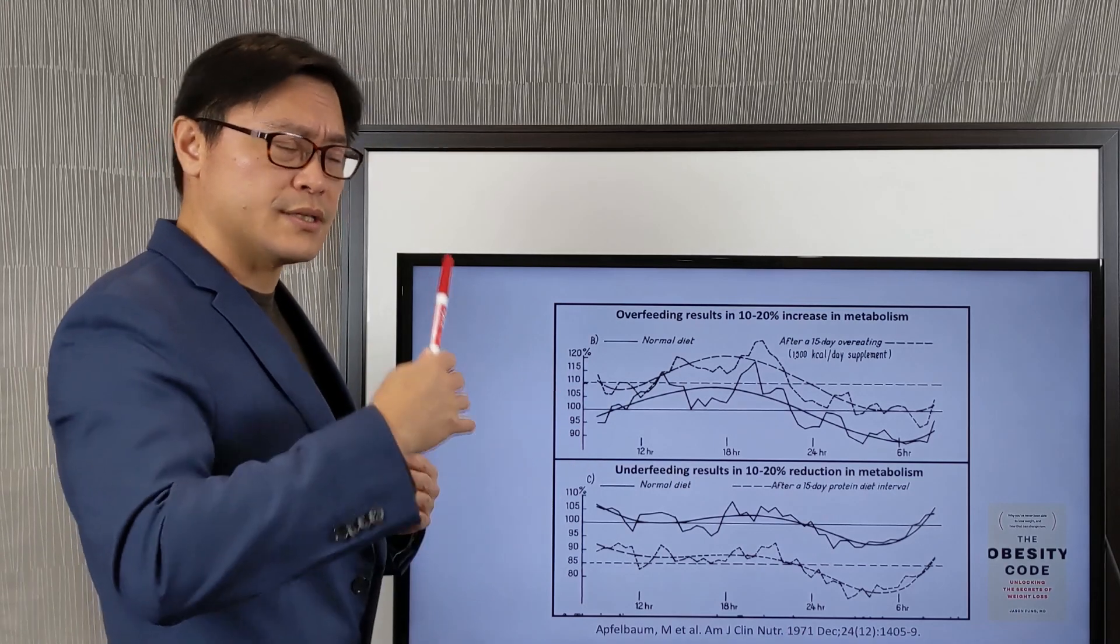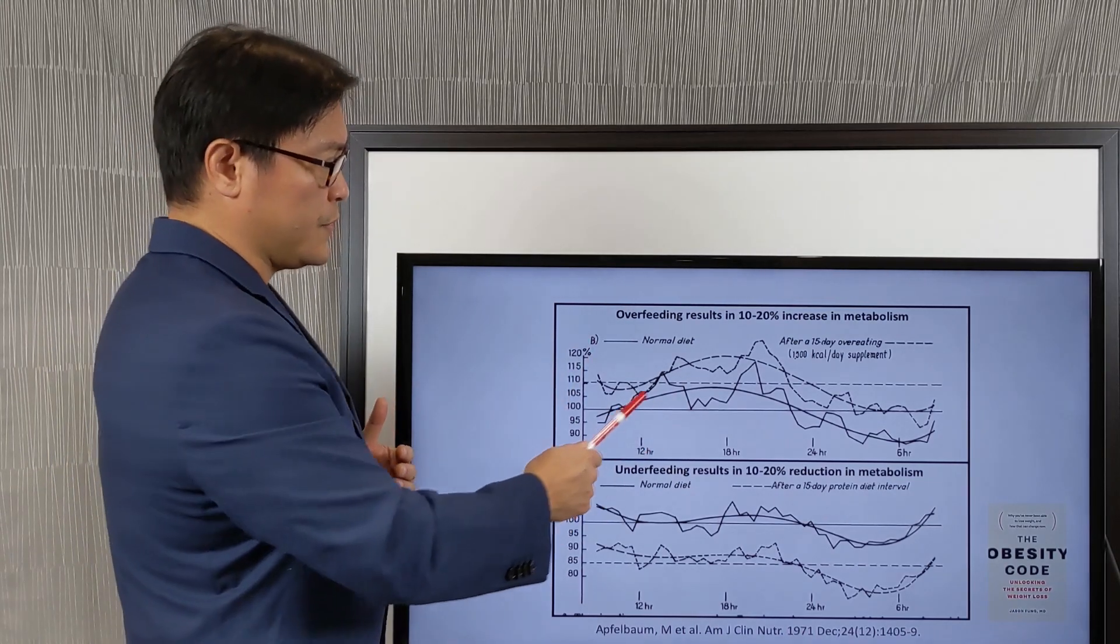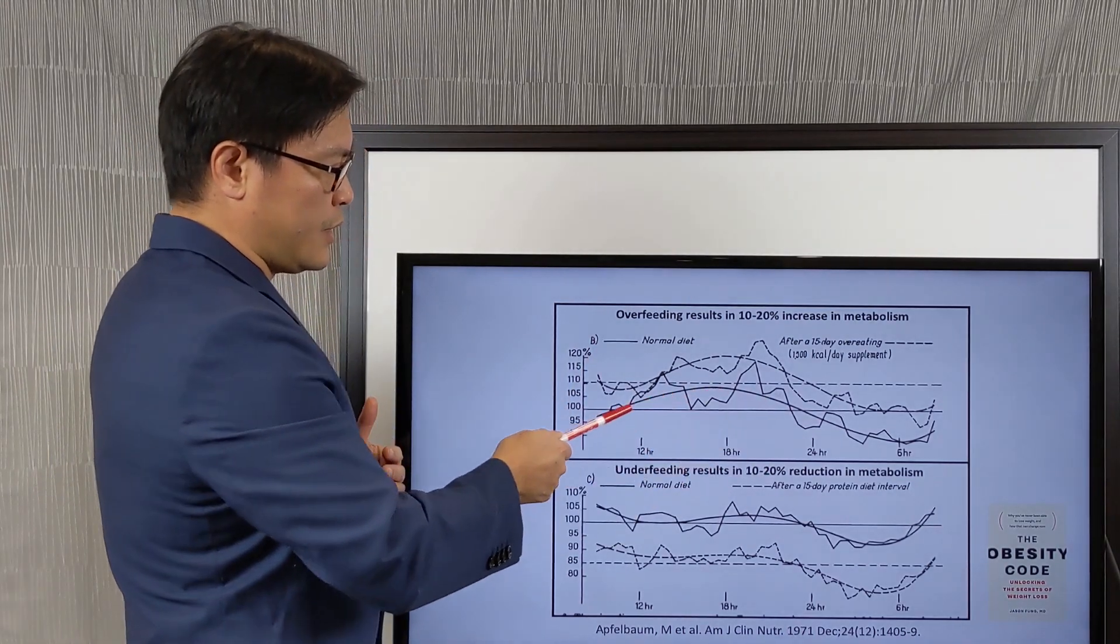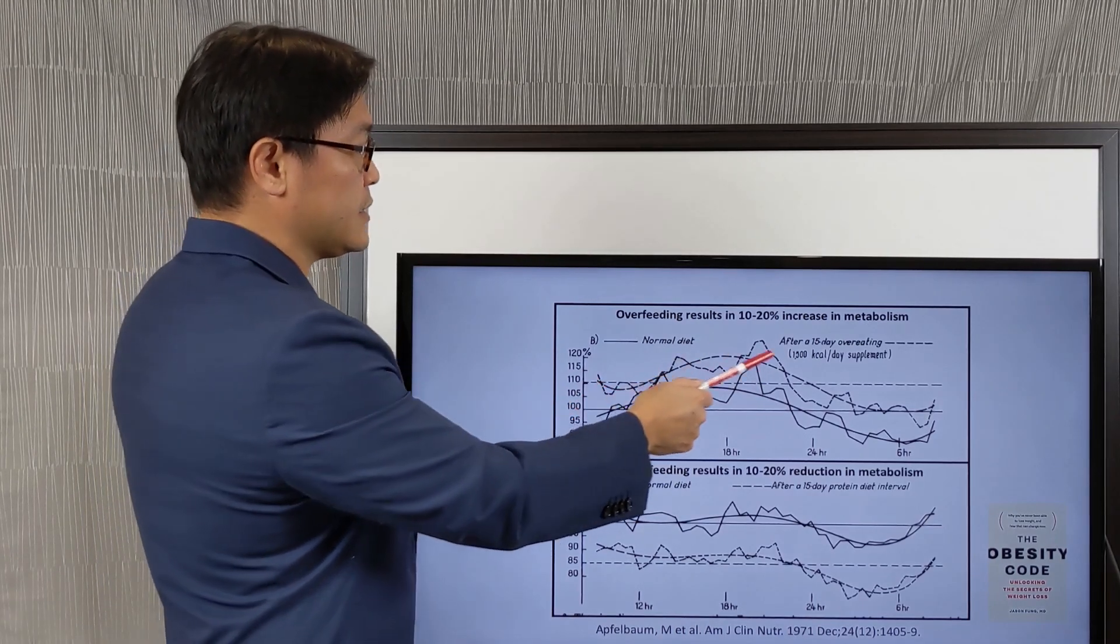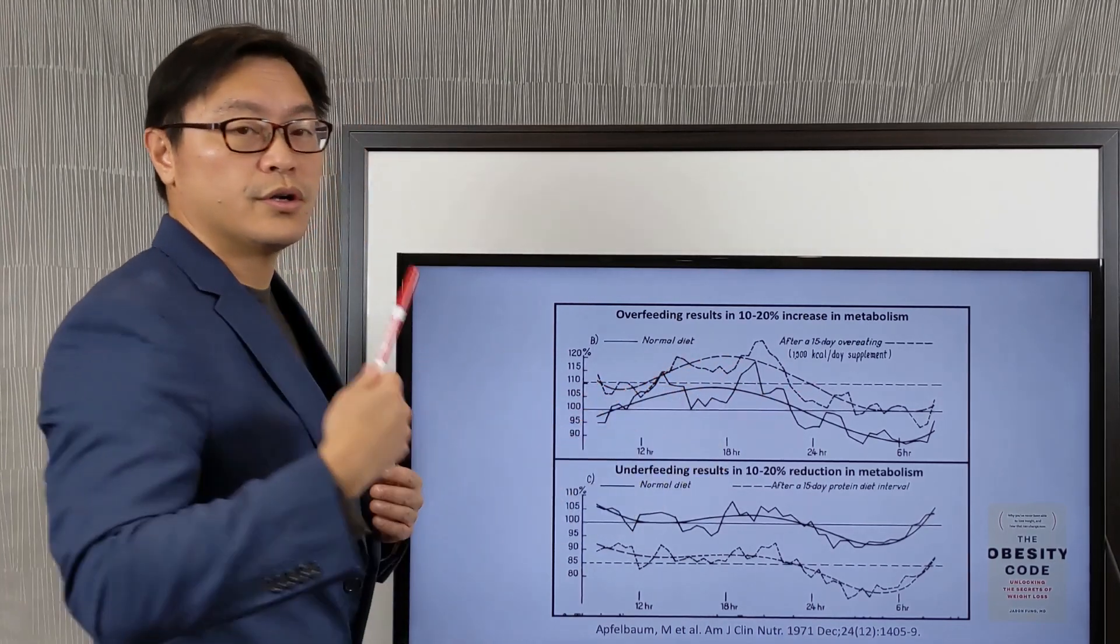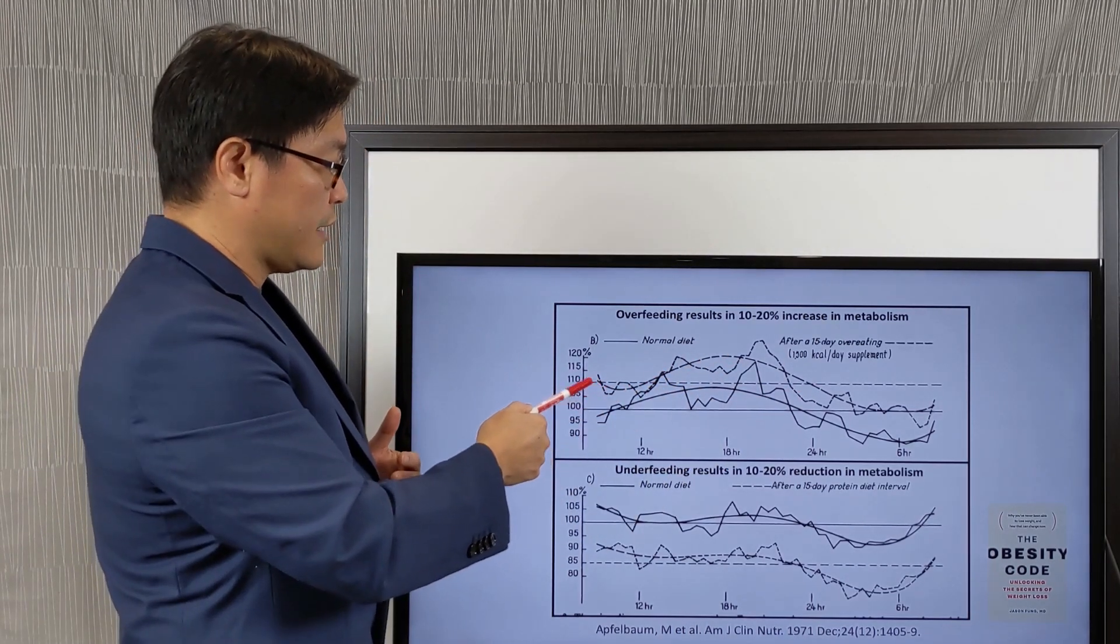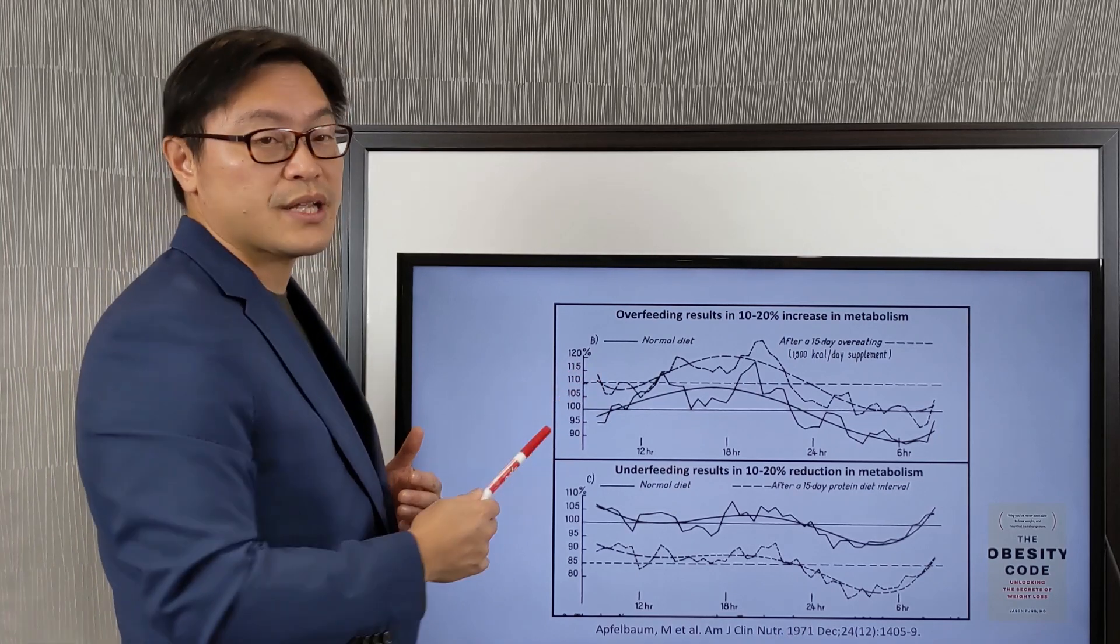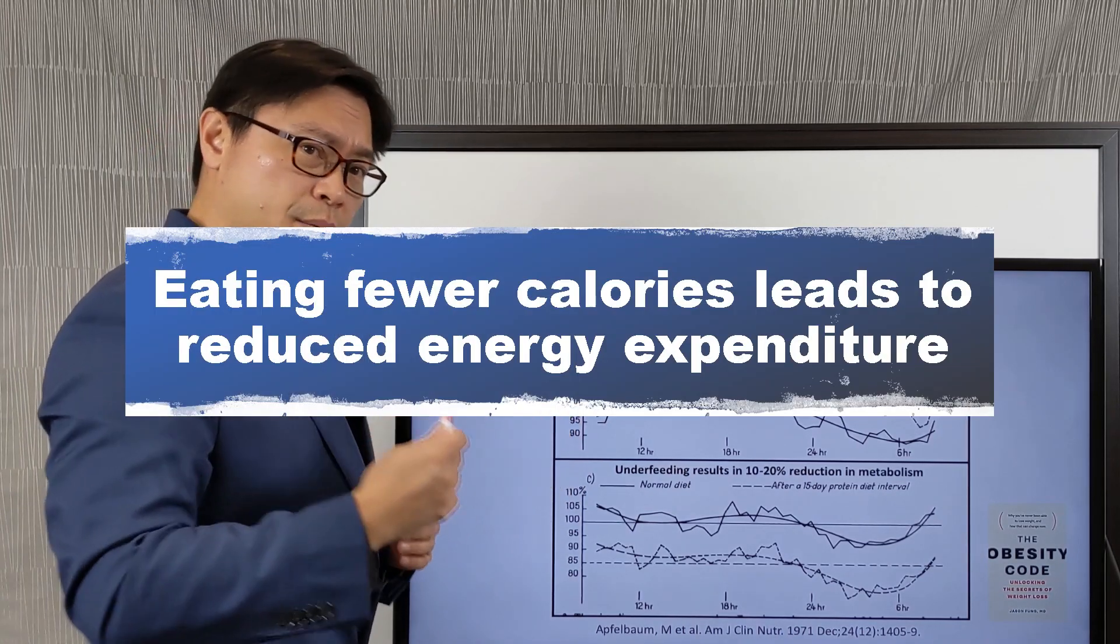So at baseline they were here, and as they overate, their bodies actually started to burn more calories. You can see that they're about a 10 to 20 percent increase in the number of calories out.